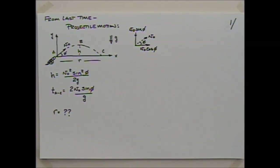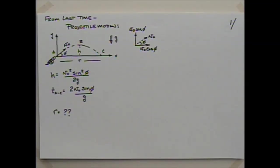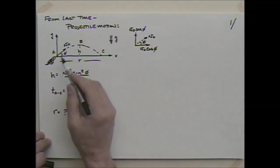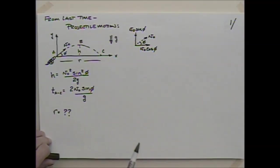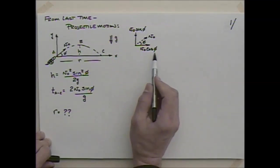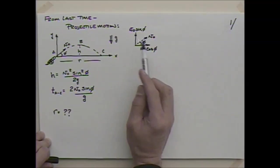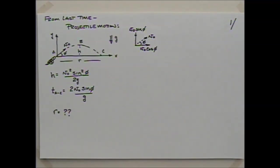We left off last time with projectile motion. We're looking at the trajectory or motion of a golf ball, a water balloon, baseball, tennis ball, or military cannons. They follow the same rules. We looked at the scenario where you fire something with a velocity v₀ at some angle φ from the horizontal, which breaks into v₀ cosine φ for horizontal velocity and v₀ sine φ for vertical velocity.